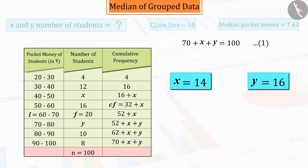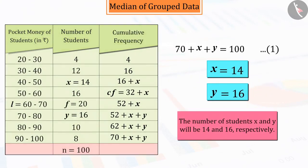So we can say that the number of students x and y will be 14 and 16 respectively.